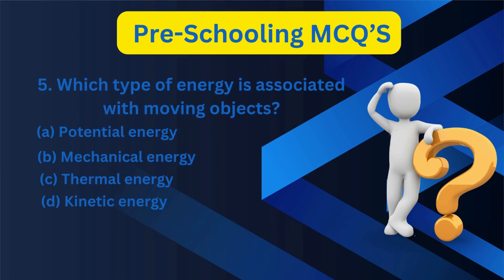5. Which type of energy is associated with moving objects? A. Potential energy, B. Mechanical energy, C. Thermal energy, D. Kinetic energy.